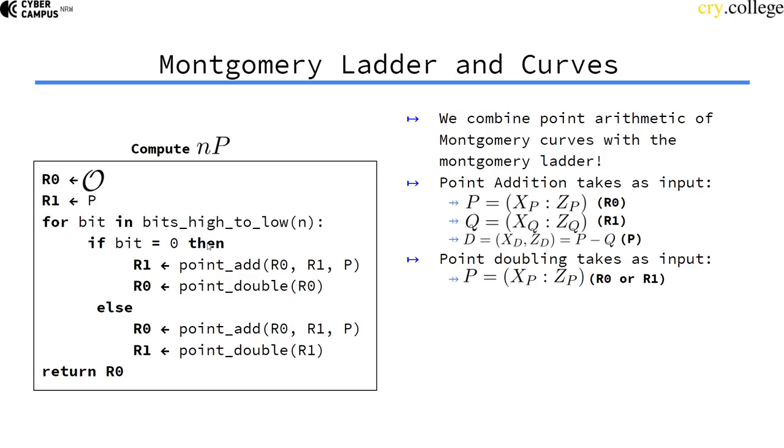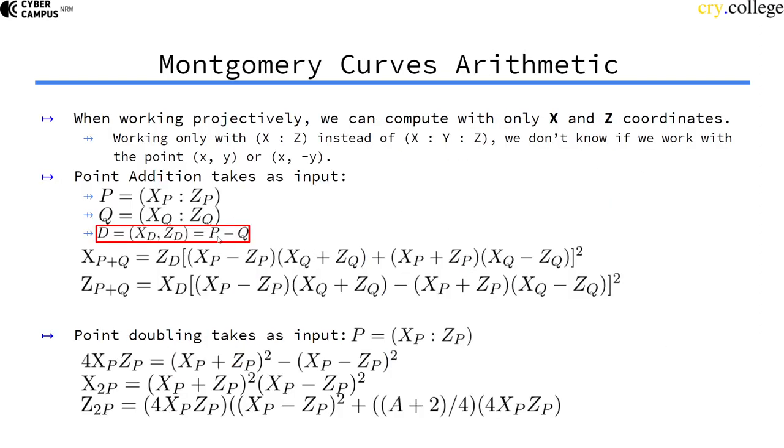That's quite handy. So in our Montgomery ladder, we just extend this point add function with an additional parameter, that is P, that is the base point we want to calculate the scalar multiplication on. So now we have this difference between R0 and R1 for free.